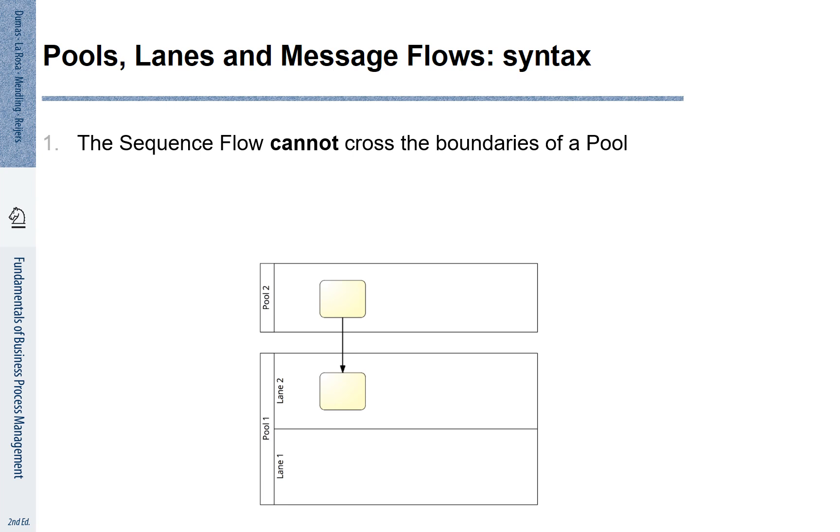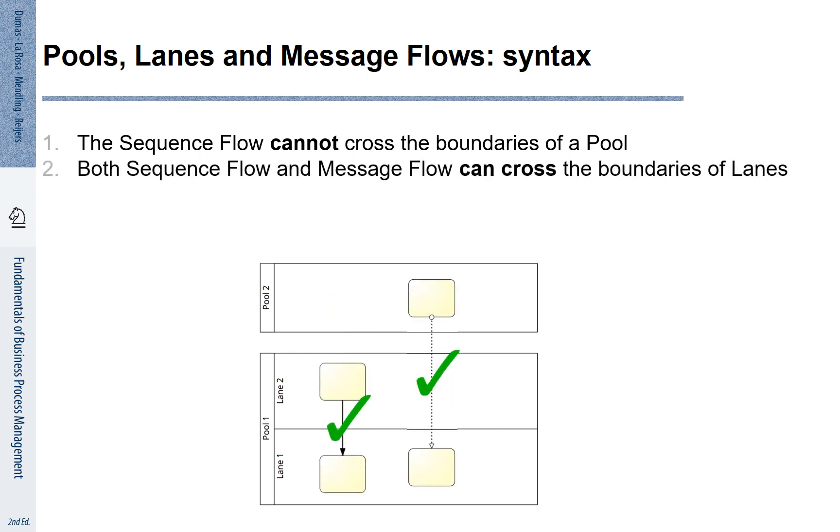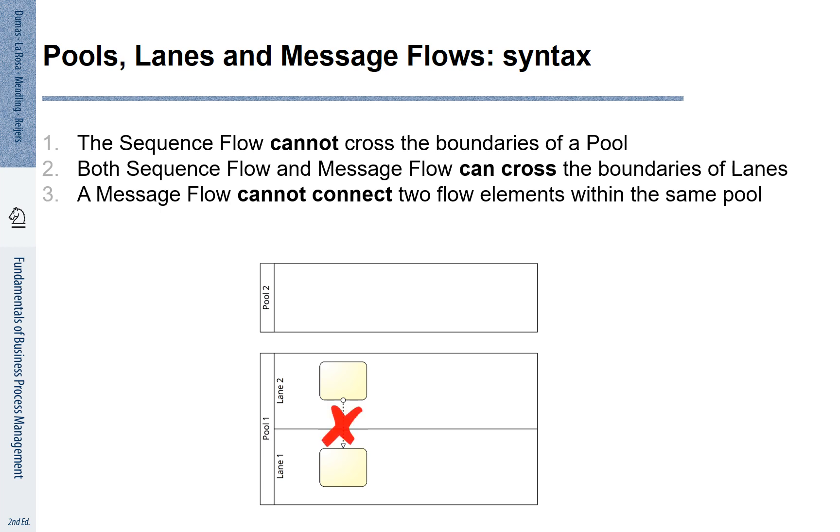We have to distinguish sequence flow and message flow. Sequence flow is how we connect activities inside a pool. This means we are not allowed to connect activities across different pools with sequence flows. This is why we have message flows available. Message flows are meant to be used when activities across different pools interact. The same line of reasoning applies when we want to connect activities in a pool. We have to use sequence flows for this. But we are not allowed to use message flows inside a pool.